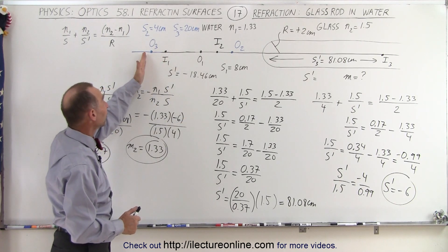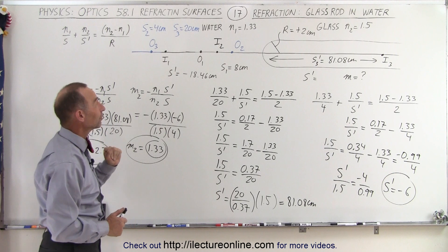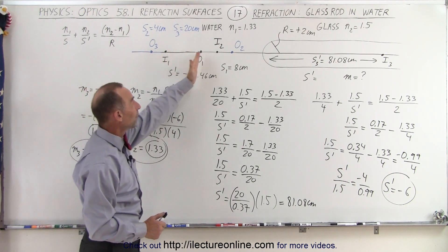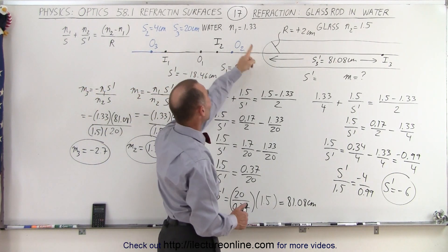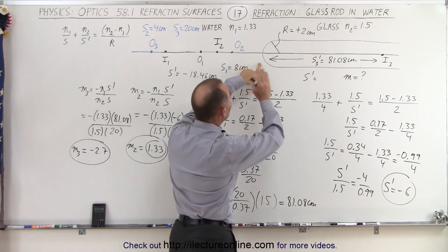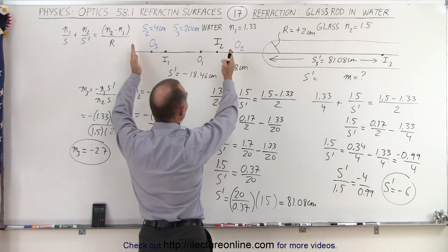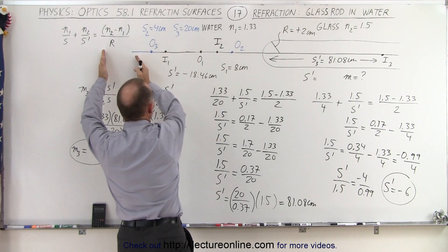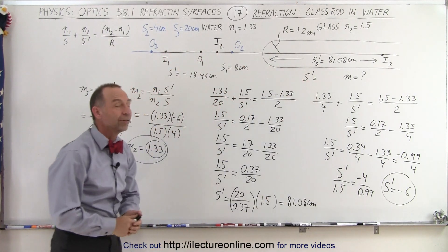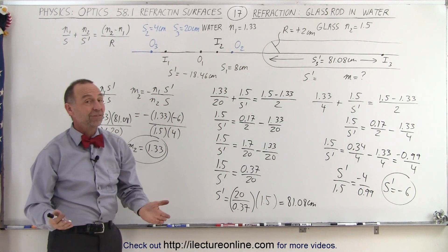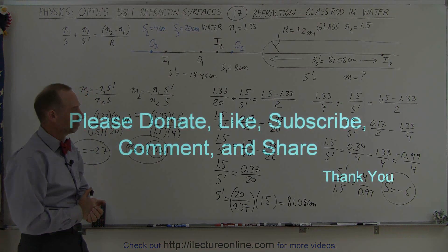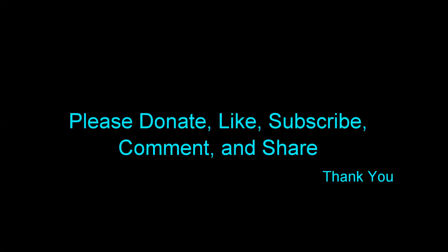Notice that we only have an image on the other side of the boundary when we place the object far enough away. Otherwise, with any object close to the boundary at a glass rod-water interface, the image will be on the same side as the object. When you put the object far away, the image appears inside the rod. And that's how it's done — thank you.